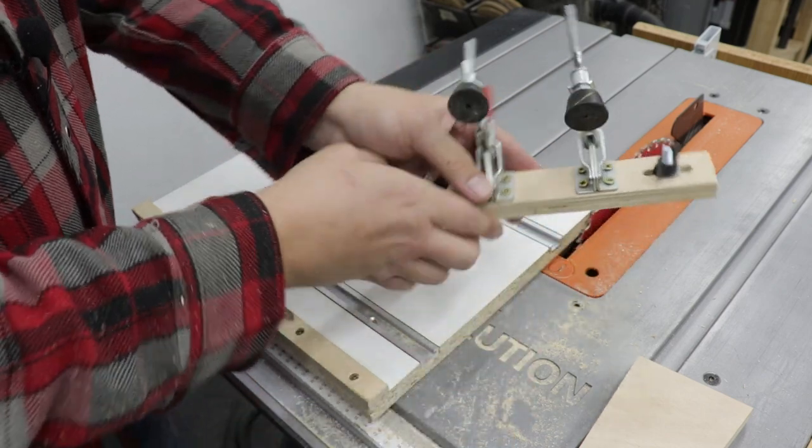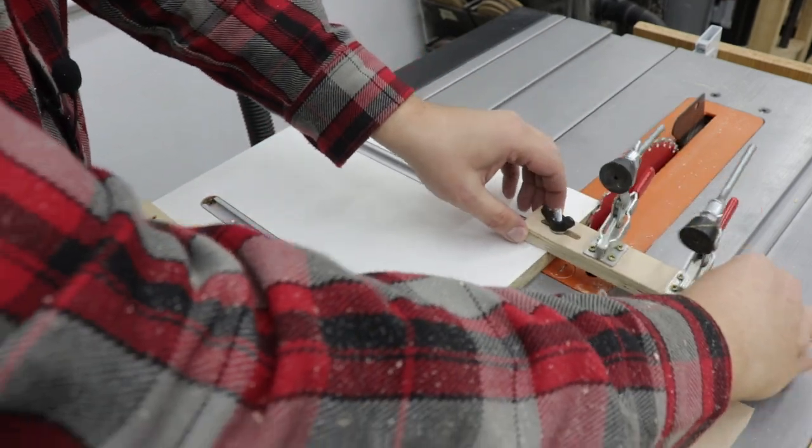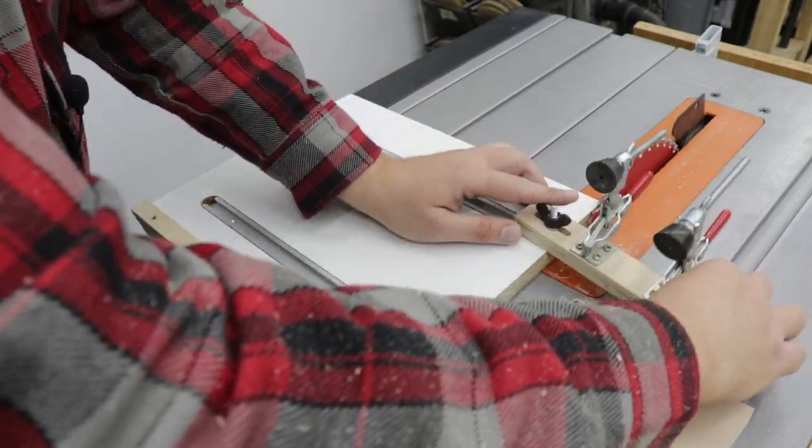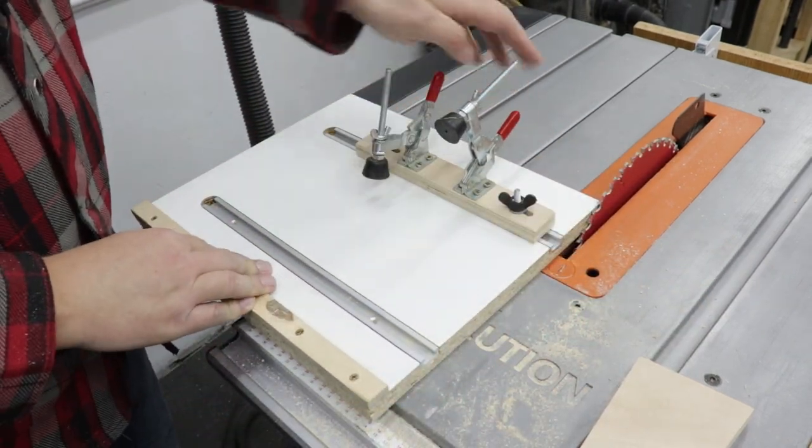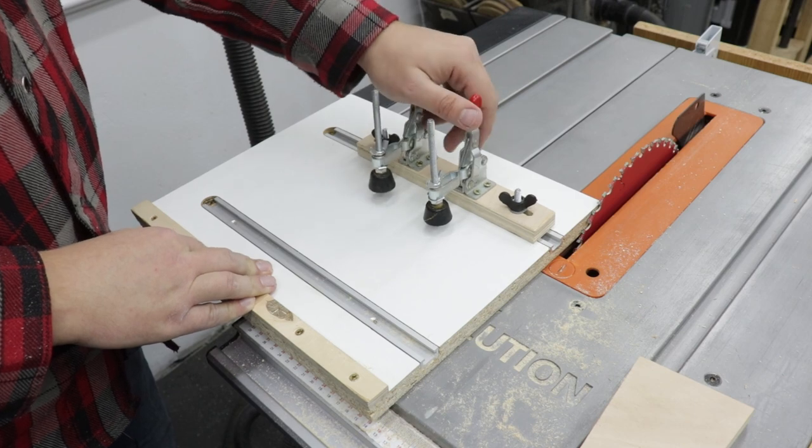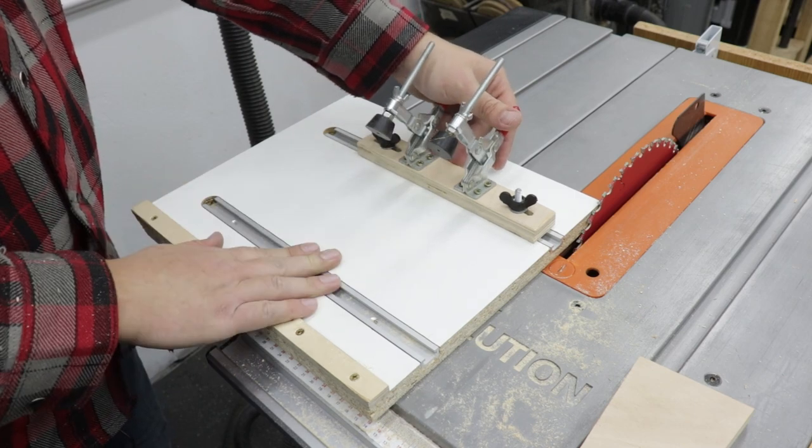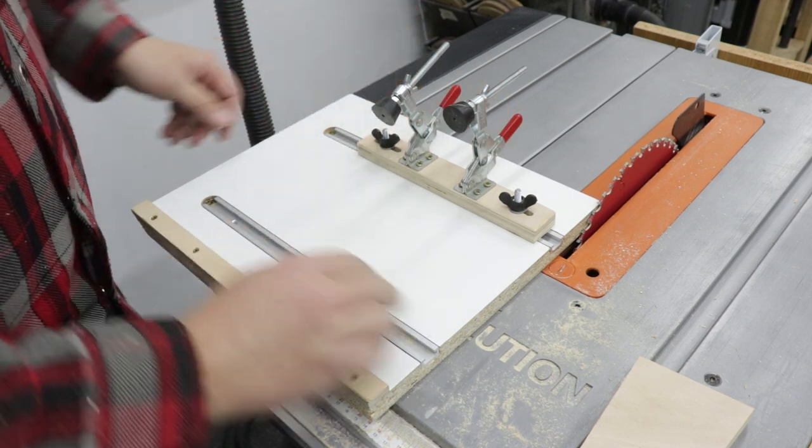Also, you can change the position of the movable fence with toggle clamps to any of the T-tracks depending on what clamping needs you will have and what position you're going to need. Any angles are possible with this jig.